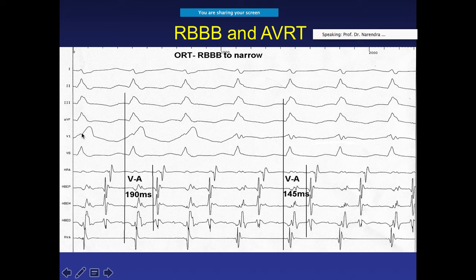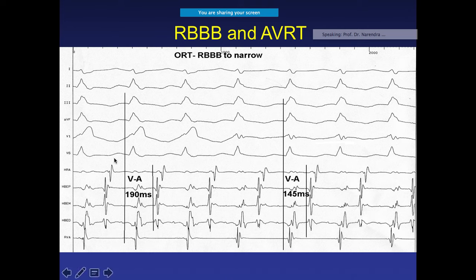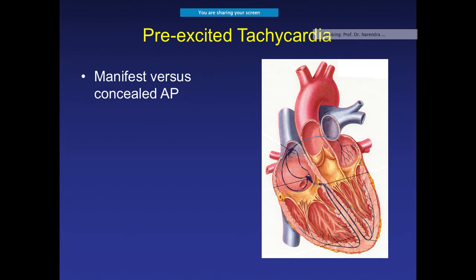In another ECG example, looking at V1 and V6 you can notice a right bundle branch block pattern. The PR interval is very short, so you can think this is most likely AVRT — atrio-ventricular re-entry tachycardia. The VA interval was initially 190 milliseconds but later became 145 milliseconds, indicating the rhythm changed from an orthodromic re-entry tachycardia to a narrow complex tachycardia.